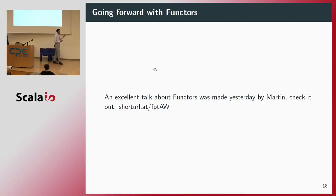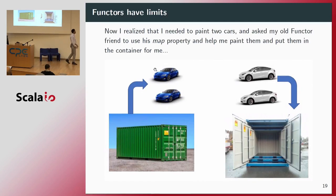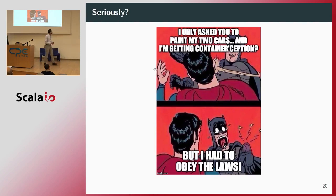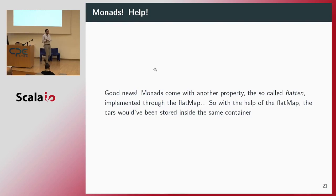Functors have limits. I realized that I had two cars to paint, not just one. So I called my old functor friend and asked: can you please give me your map property so I can use it to paint my two cars? The result wasn't what I wanted. The only thing the functor can do is take a function, map through it, and apply it to each part of my list. To solve that, we have the monads, which come with another property called flatten, implemented through the flat map. With flat map, the cars would be stored inside the same container.